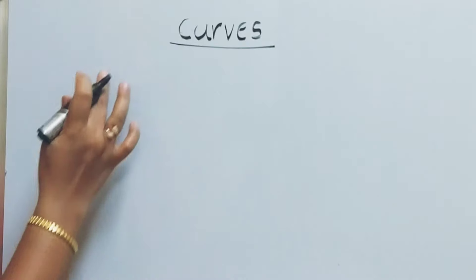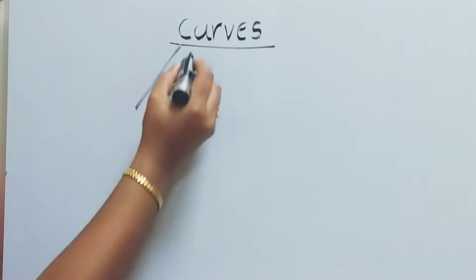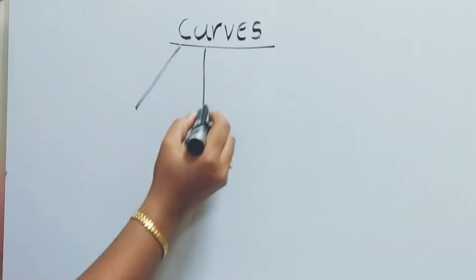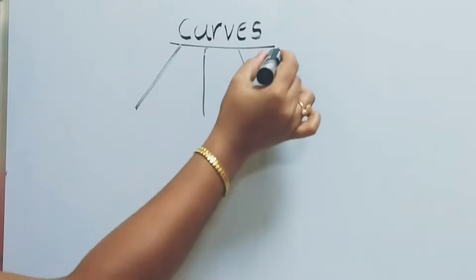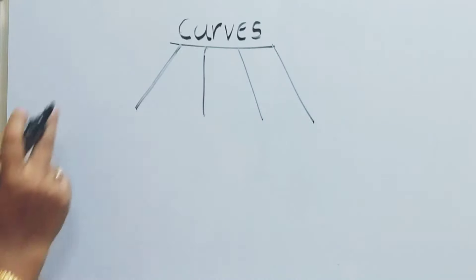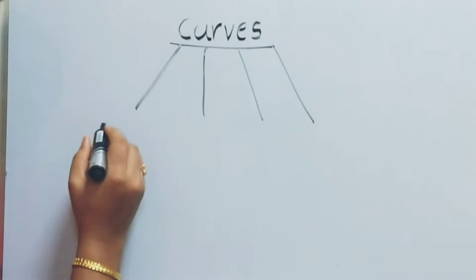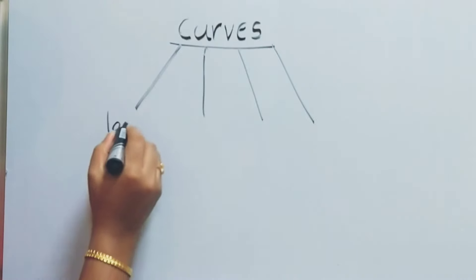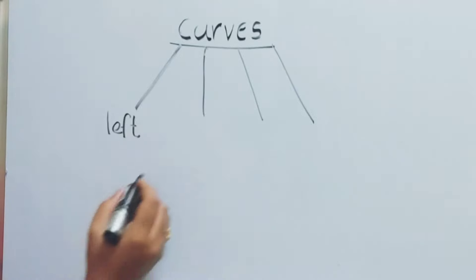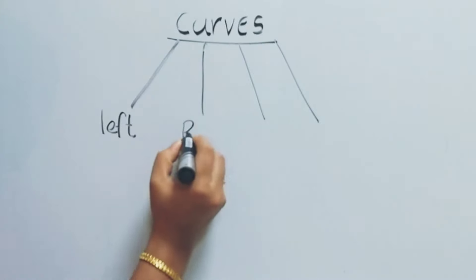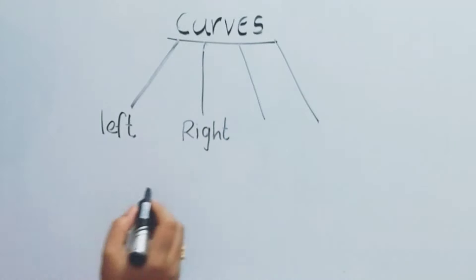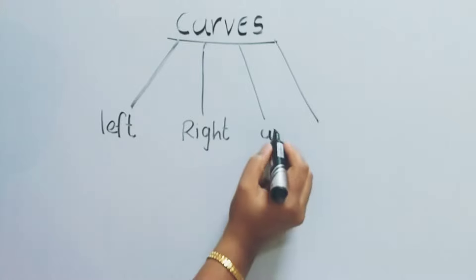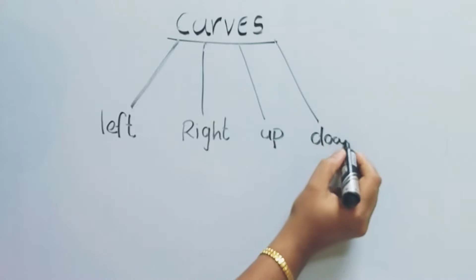Next, we learn about curves. What is a curve? A curve is also a line but it bends to one direction. There are four types of curves: the first one is left curve, the second one is right curve, the third one is up curve, and the fourth one is down curve.